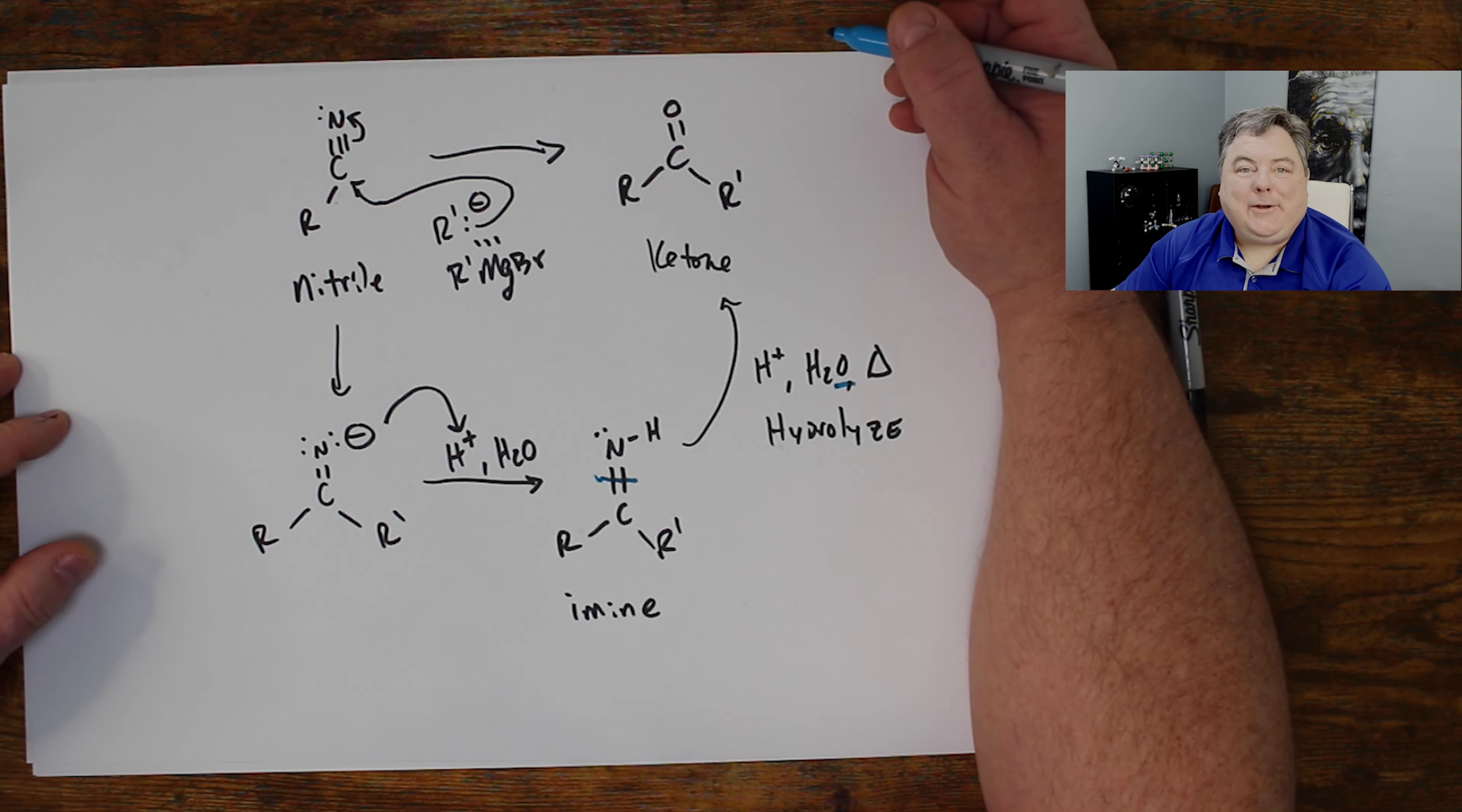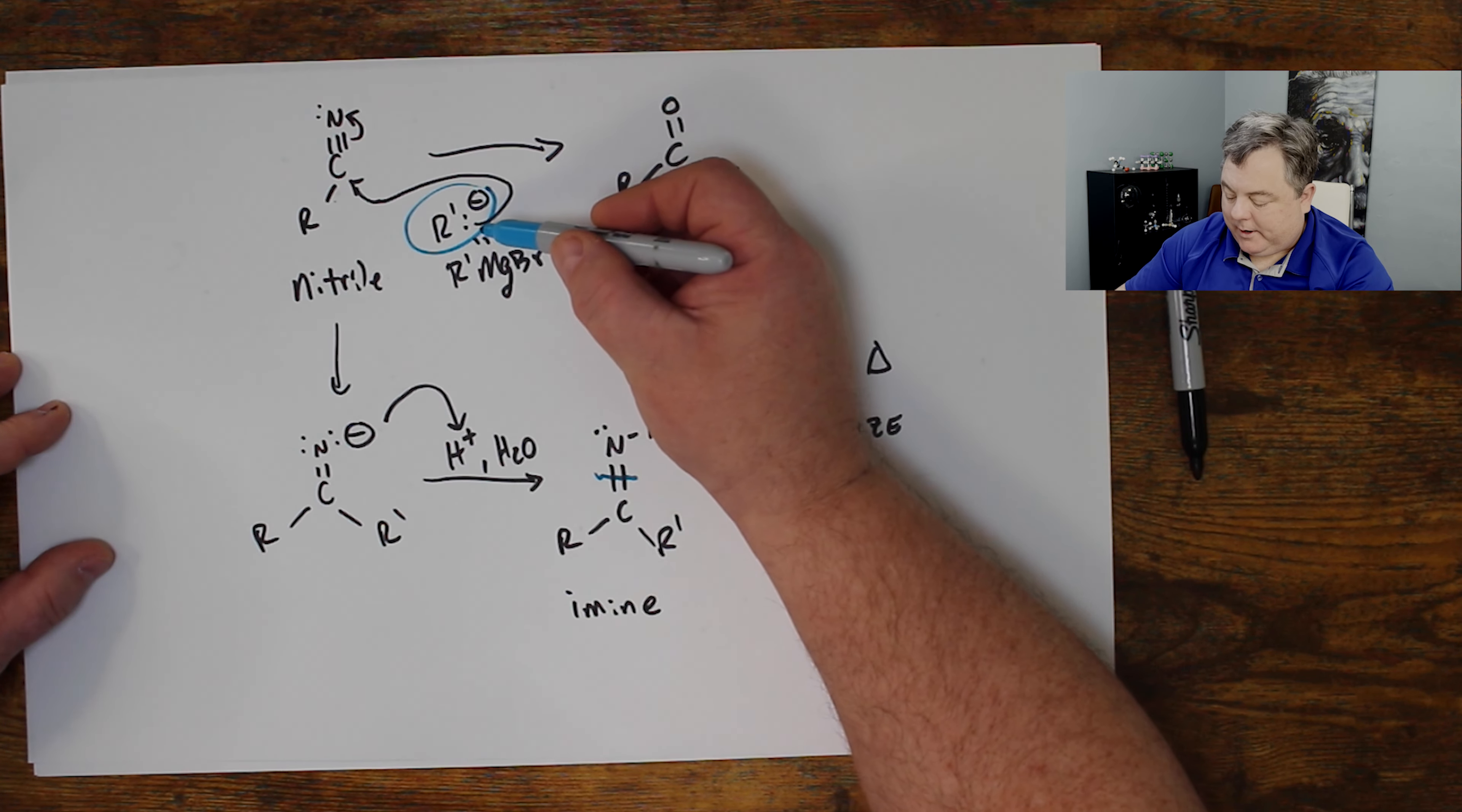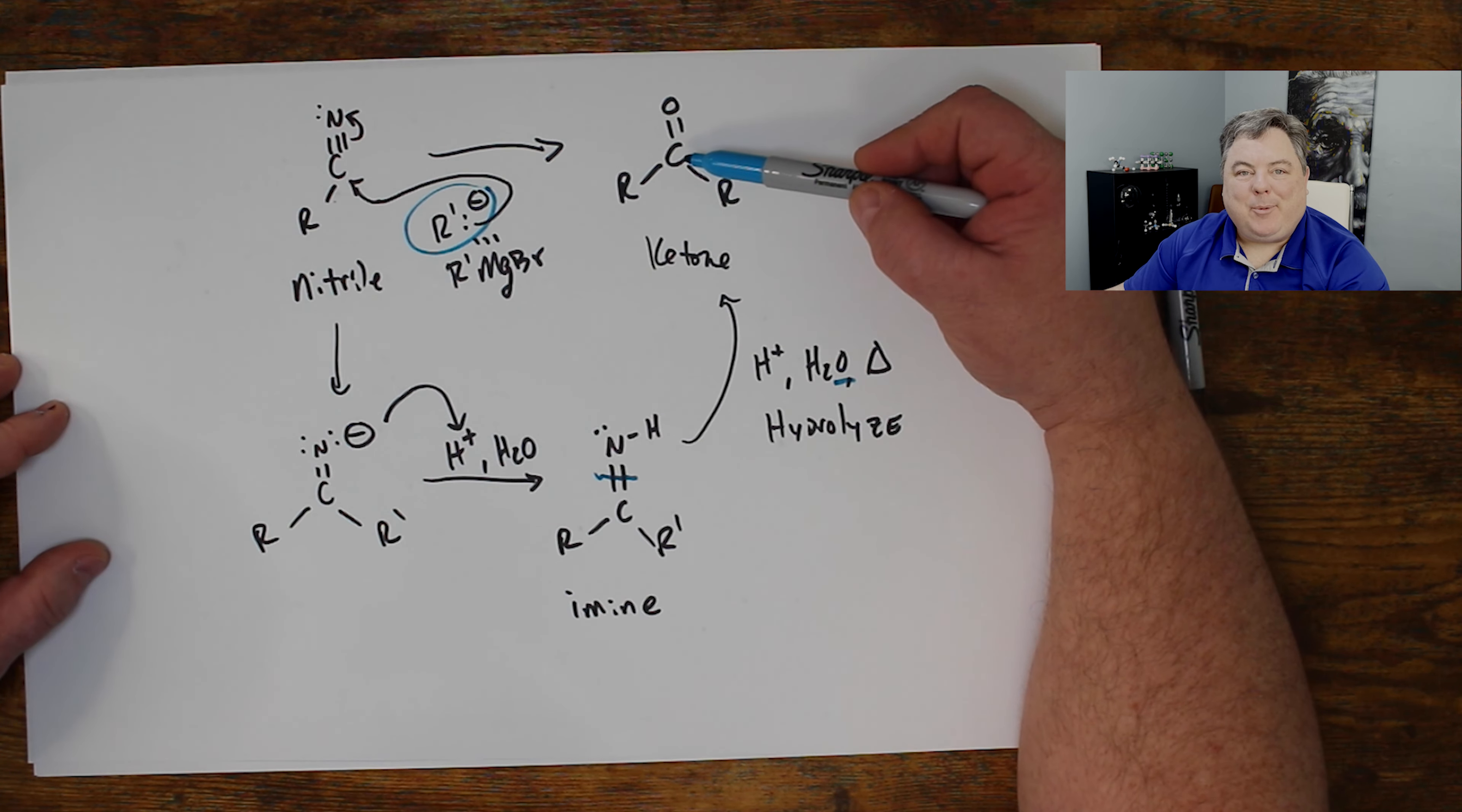That's how you make a ketone from a nitrile. Attack with a Grignard reagent, whatever carbon group you want. This is going to become an imine and that hydrolyzes to the carbonyl compound.